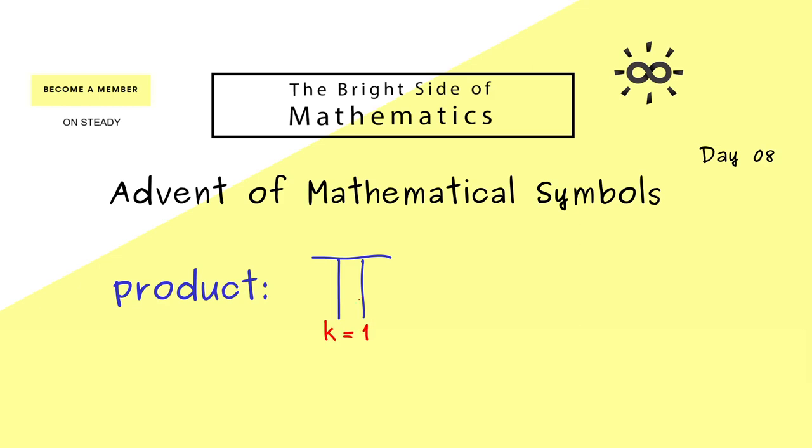So here k starts with the value 1, goes through all natural numbers until we reach the value n in the end. Hence this symbol here is a short notation for a product with exactly n factors. More precisely, we start with a1 times a2 times a3 and so on until we reach a_n.